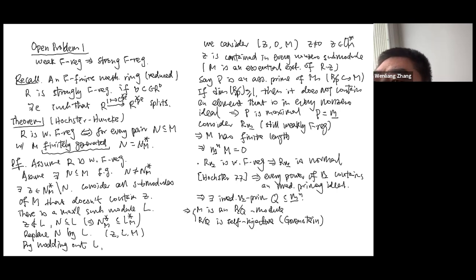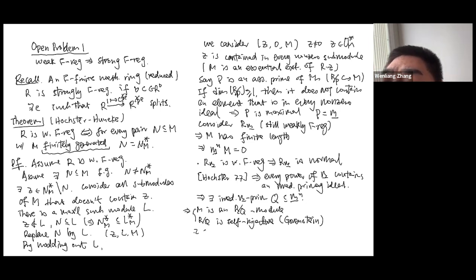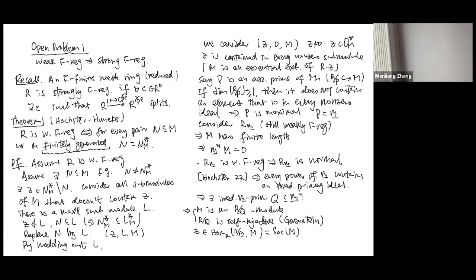The assumption is that z is contained in every non-zero submodule, and M has finite length. So z must be contained in the socle. The socle must be one-dimensional: if there were multiple copies of the residue field k, their intersection would be zero, but z must be in all of them, forcing the socle to be exactly one copy of k.